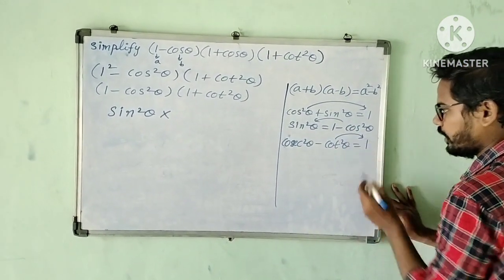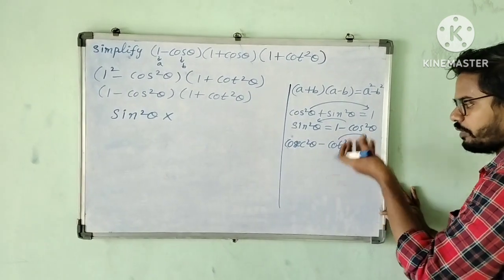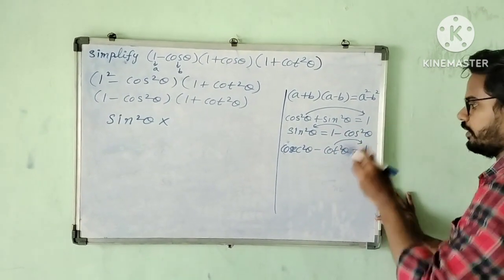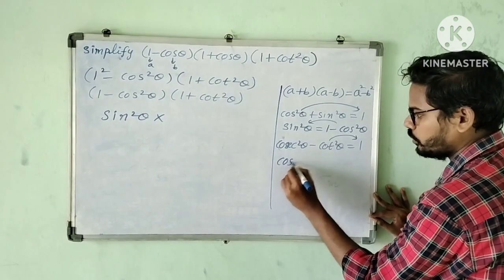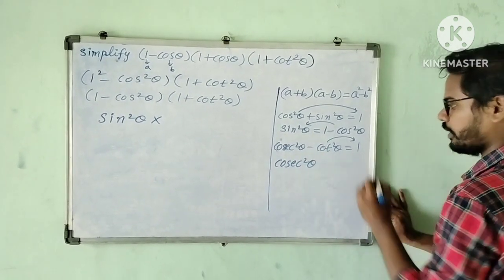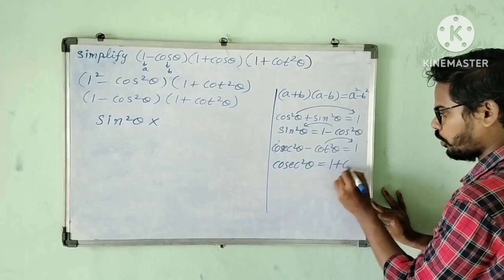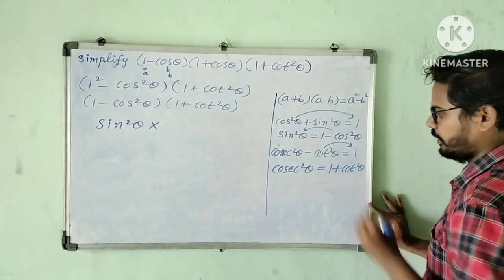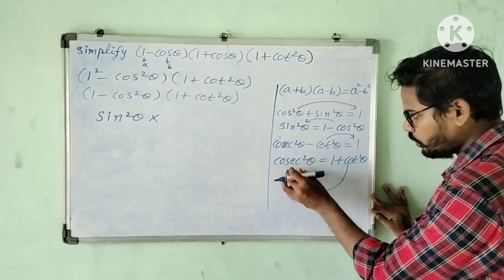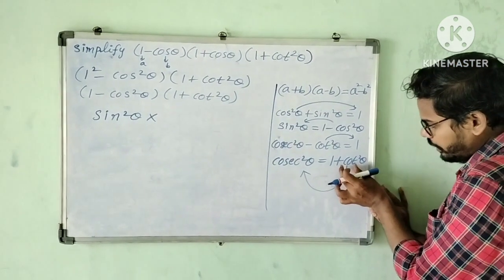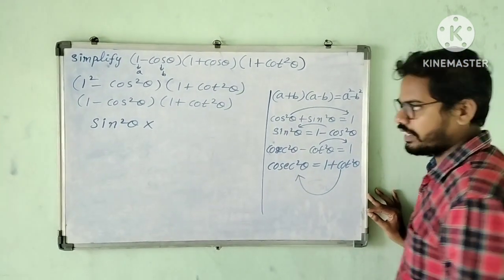Now for 1 plus cos squared theta, transposing: negative cos squared theta becomes positive cos squared theta on the other side. In place of 1 plus cos squared theta, we can write cosecant squared theta.